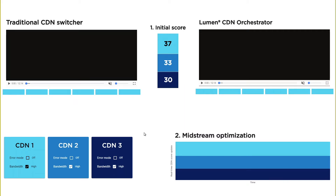By that I mean that an API returns scores for a CDN based on the quality or business inputs of the customer's choice, and the multi-CDN tool identifies the most appropriate CDN from the server side at the start of the session.